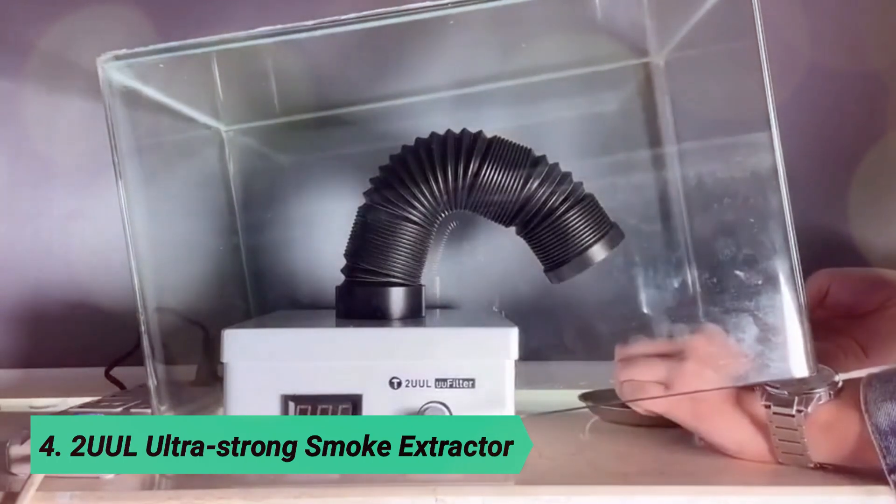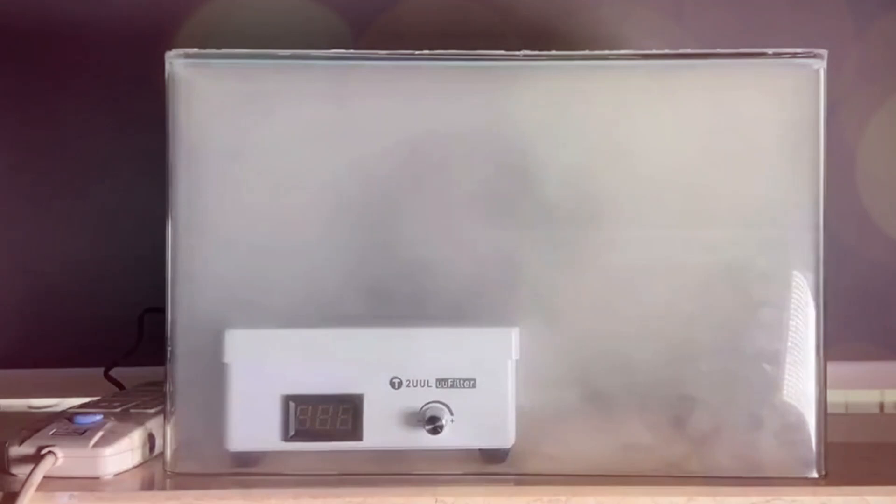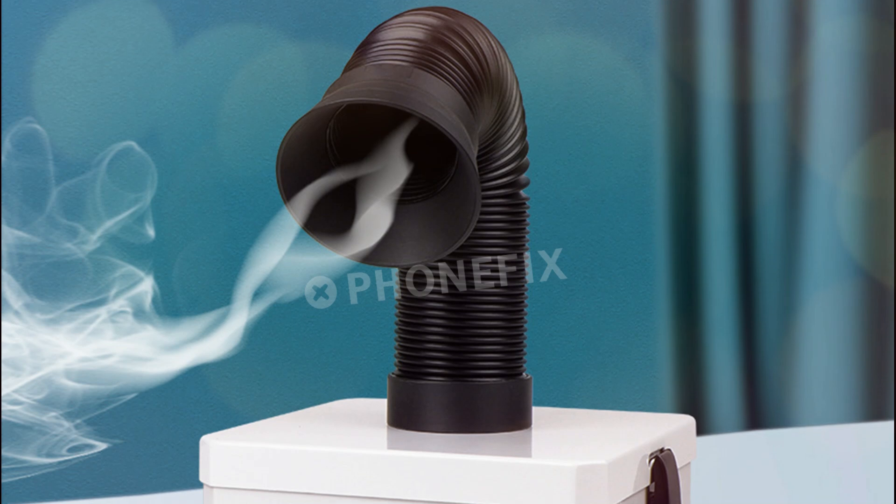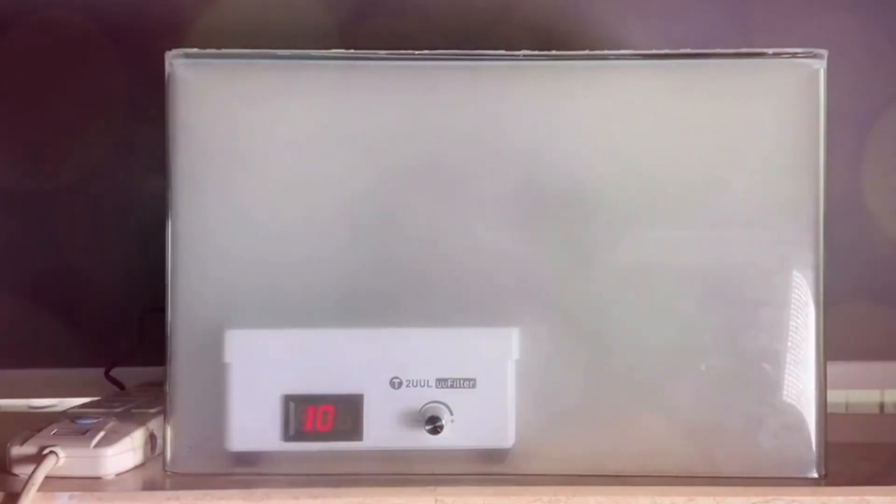At number 4, TUUL Ultra Strong Smoke Extractor. This high-efficiency fume extractor is designed for a cleaner and safer workspace. With simple installation, it requires no extra piping, keeping your work area neat and organized.